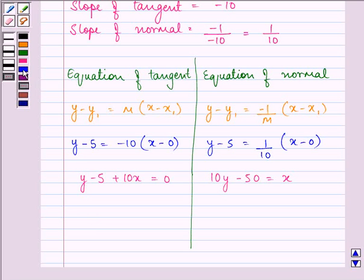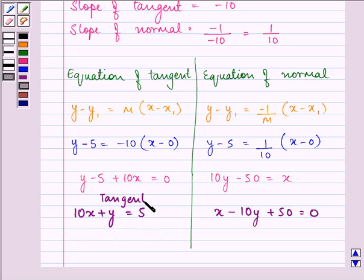which can be written as 10x plus y is equal to 5 and here we can write it as x minus 10y plus 50 equal to 0. So this is the equation for the tangent and this is equation for the normal.